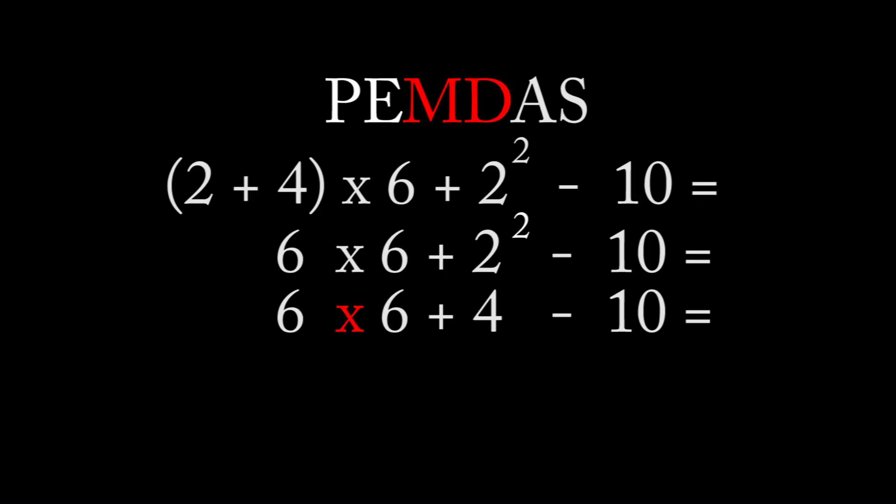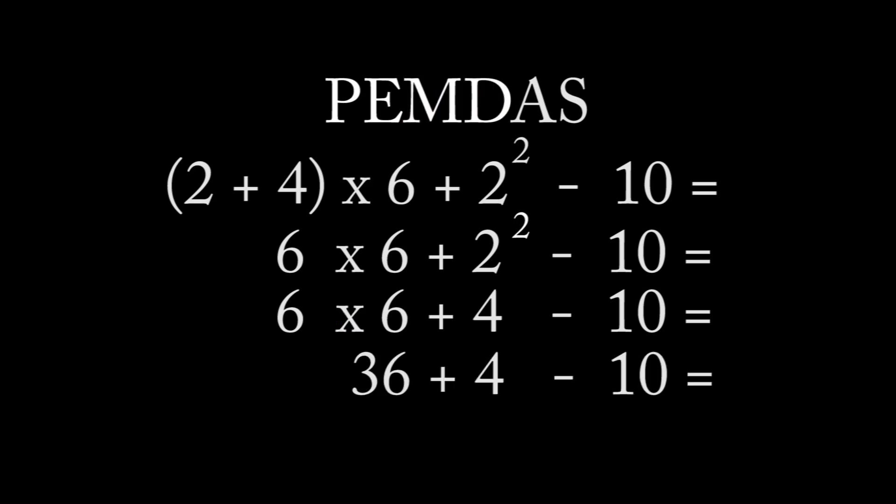Steps 3 and 4, you already know: multiply, divide the entire row. Go left to right, now take it slow, just take it slow, so here you go.